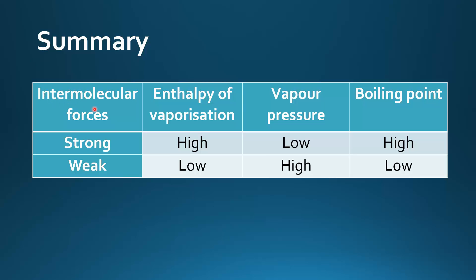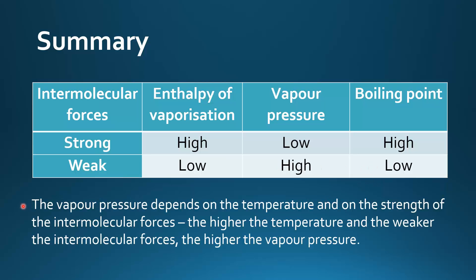Finally, a summary. We have intermolecular forces, enthalpy of vaporization, vapor pressure, and boiling point. Strong intermolecular forces mean a high enthalpy of vaporization, which means a low vapor pressure and a high boiling point. Weak intermolecular forces give a low enthalpy of vaporization, a high vapor pressure, and a low boiling point. So vapor pressure depends on temperature and on the strength of intermolecular forces — the higher the temperature and the weaker the intermolecular forces, the higher the vapor pressure.